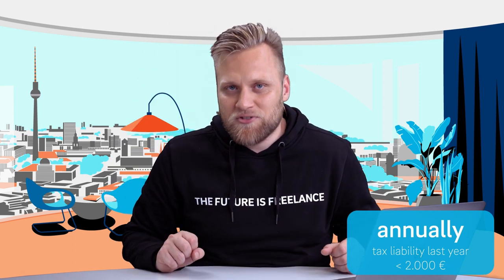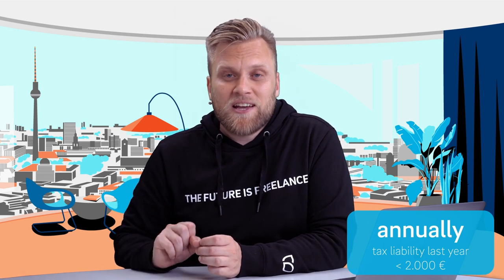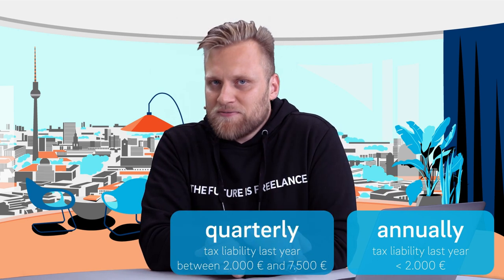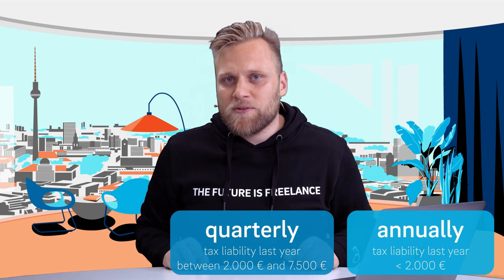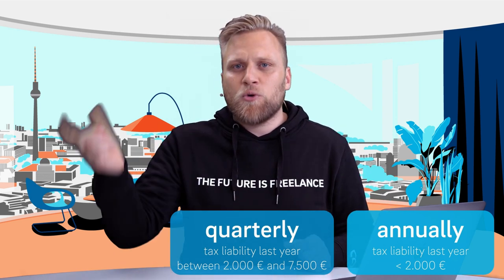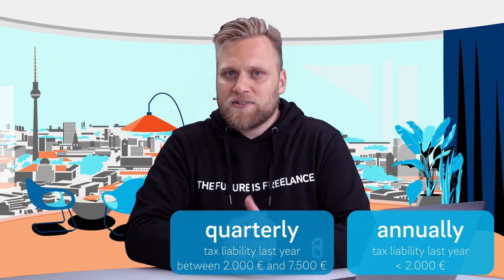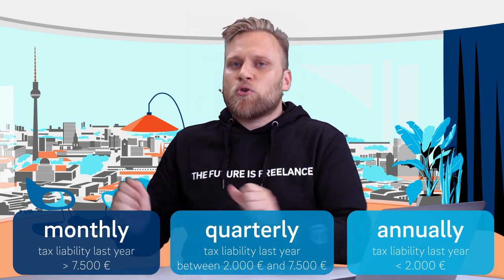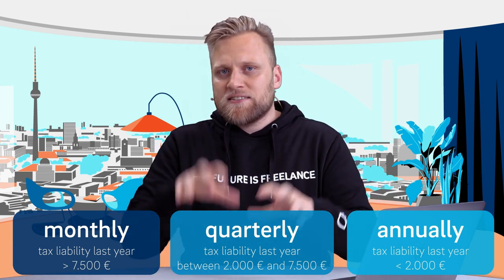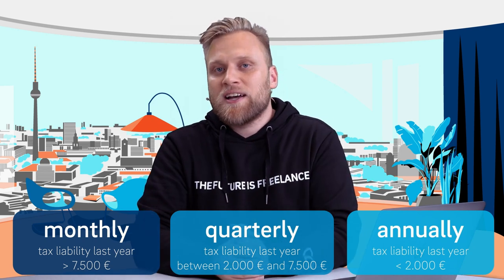If your tax liability was below the threshold for the entire last year, it is sufficient to file once a year as part of the annual VAT return. If it was between the thresholds, you file quarterly — for example, the second quarter covers April, May, and June. If the liability exceeded the upper threshold, you handle it monthly: each month you calculate the whole thing and transfer the corresponding amount or get it refunded.